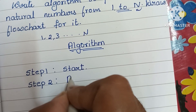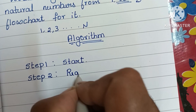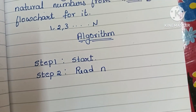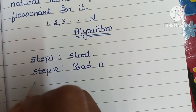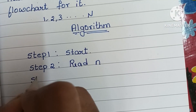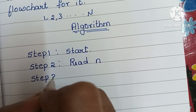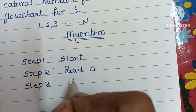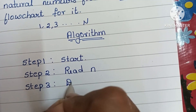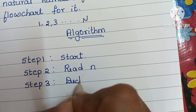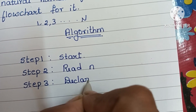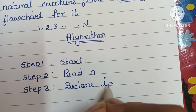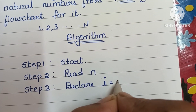In step two, we read the variable N value — Read N. In step three, we declare the value of i, initially i is equal to 1.